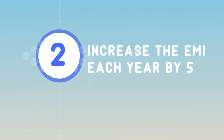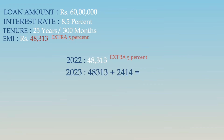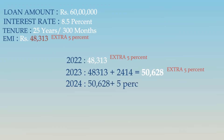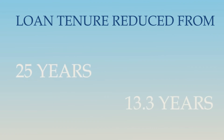Number 2: Charlie will have to increase his EMI by 5% every year. In the first year he pays 48,313 rupees. In the second year he pays 5% extra — that is 2,414 rupees extra — making it 50,628 rupees. In the third year, he pays 5% of the latest amount, that is 50,728 rupees plus 2,415 rupees, which equals 53,265 rupees. In the same way, Charlie's loan tenure will decrease from 25 years to 13 years and 3 months.